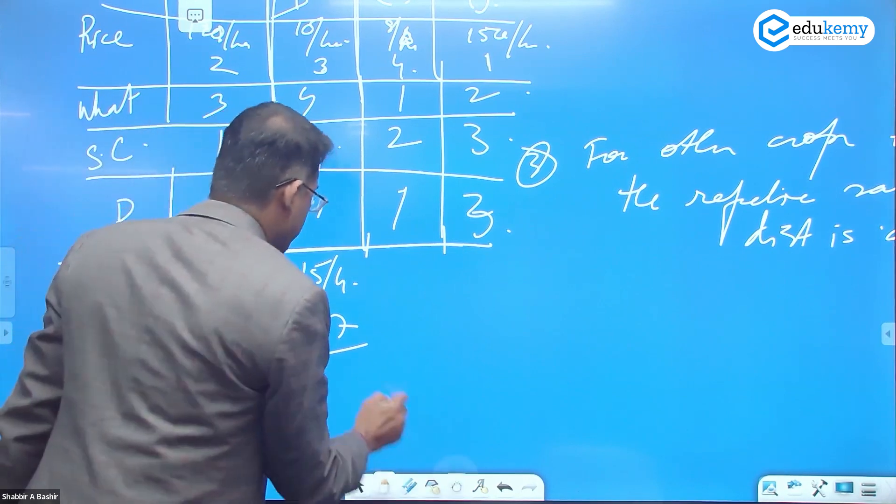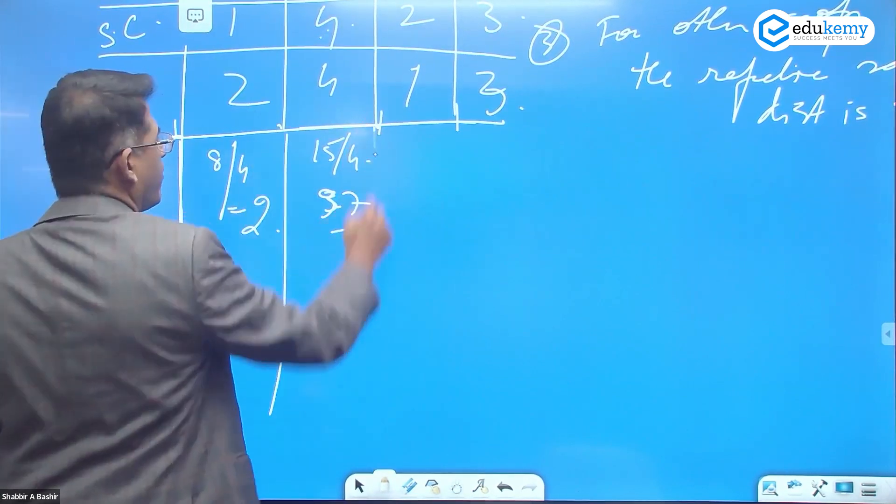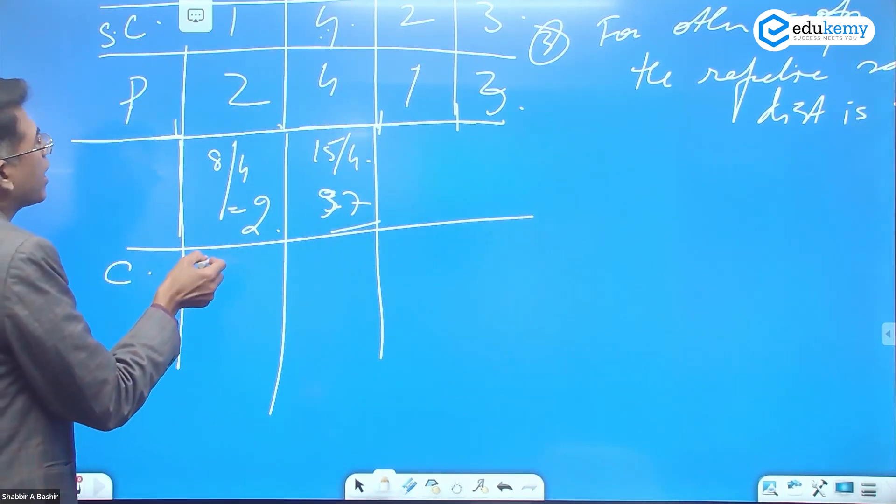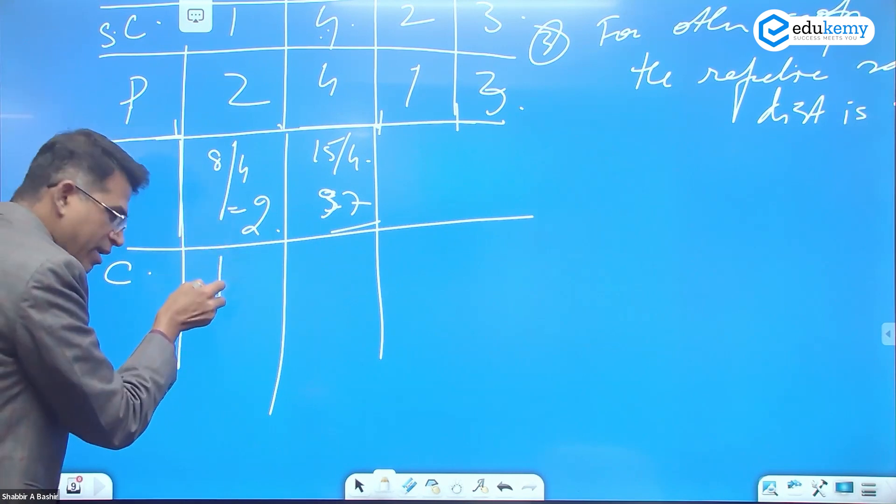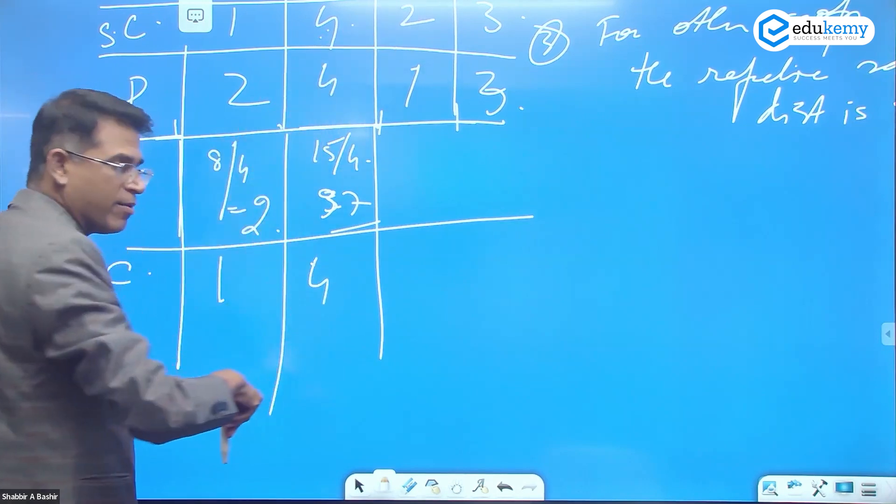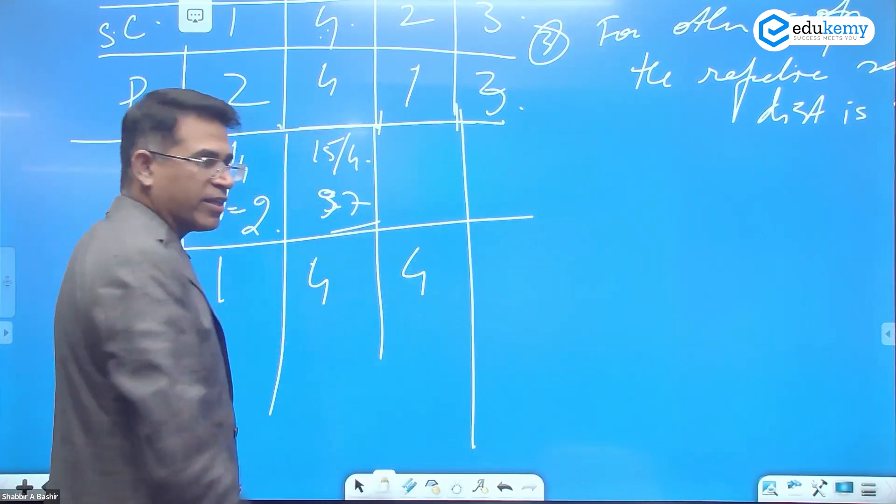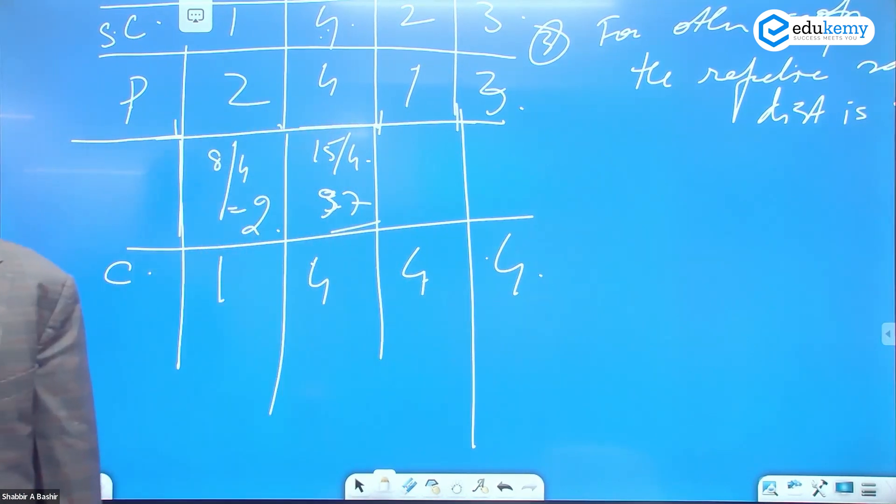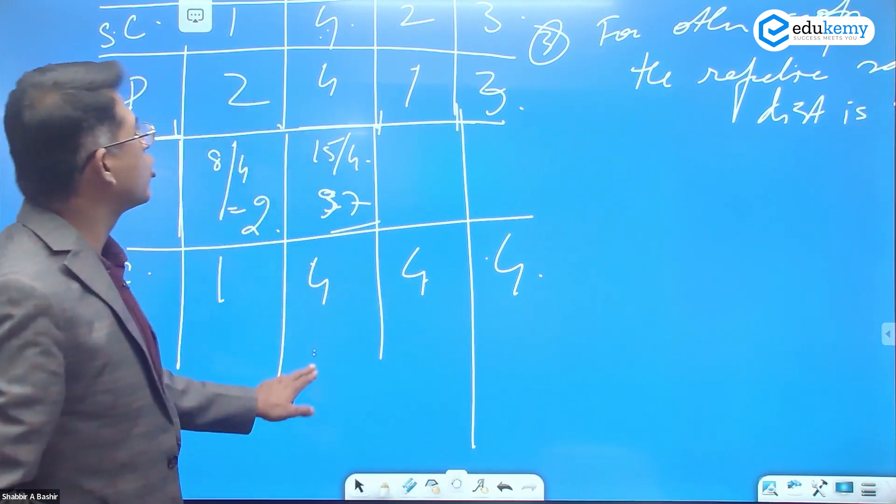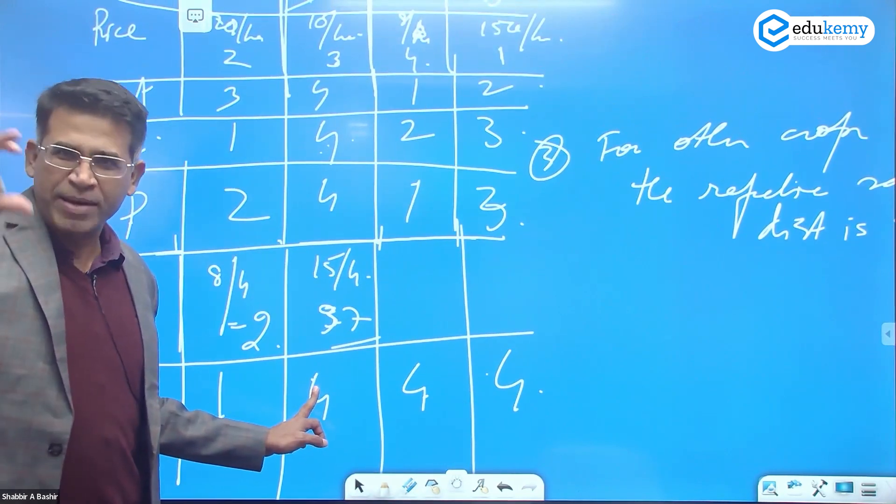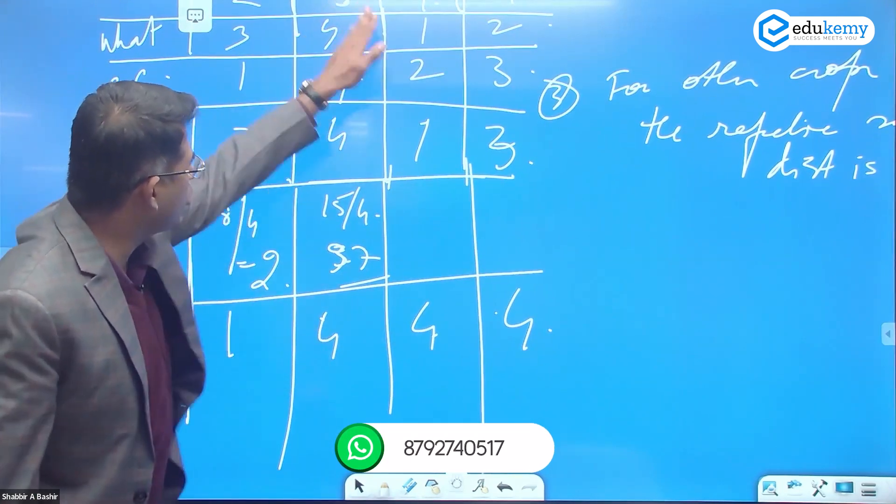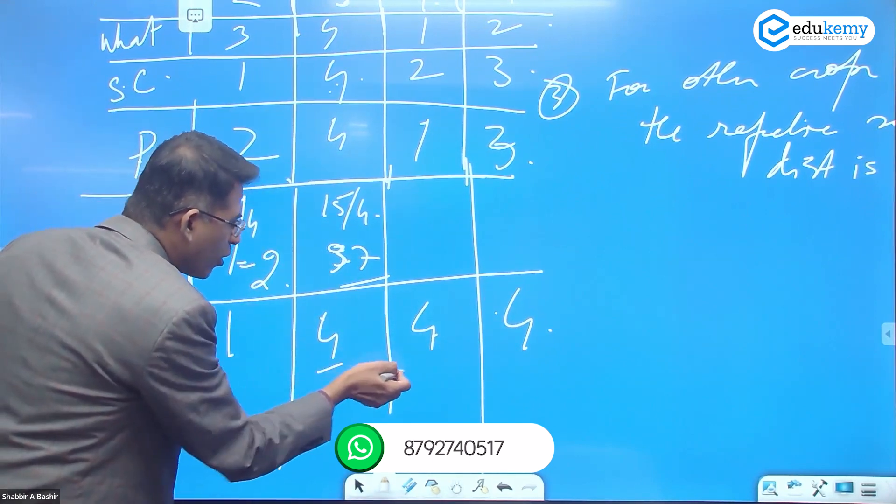If a district doesn't have production of a certain crop, we generally give it the highest value. If cotton is produced in district A but not here, this gets rank 1 and this gets rank 4, the highest among the four. If it's not produced here either, give it 4 as well. The highest value, because which is better: rank 1 or rank 4? Rank 1 is good, so the lower the number, the better.